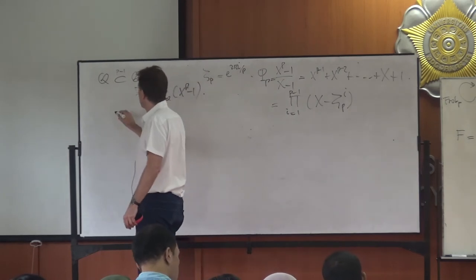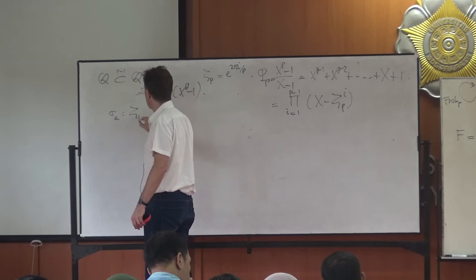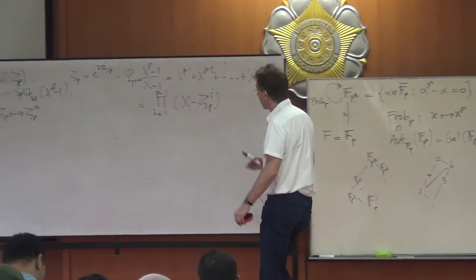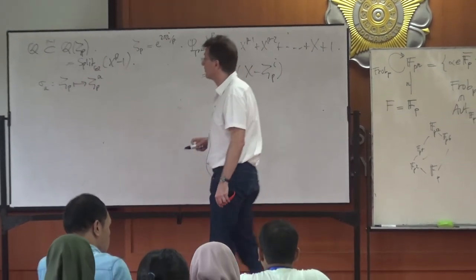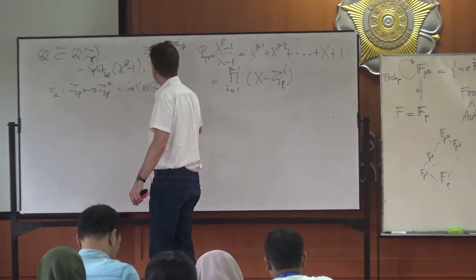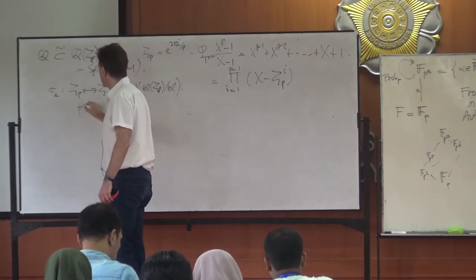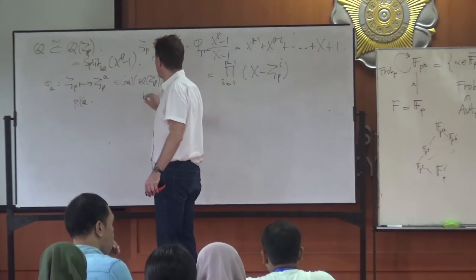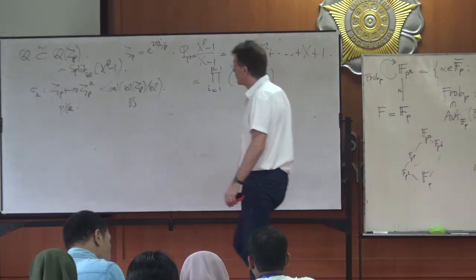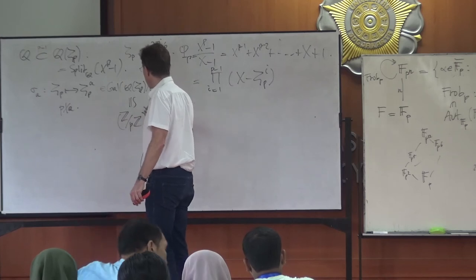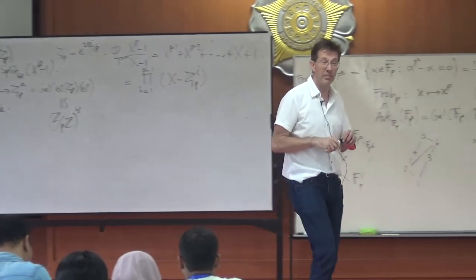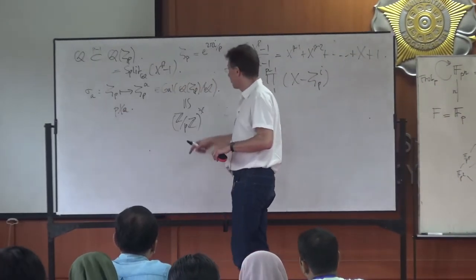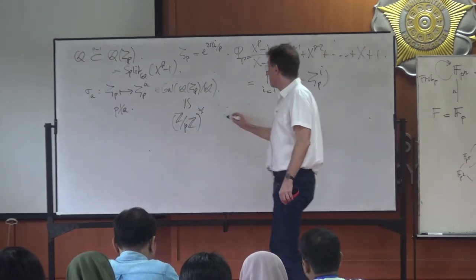For any integer a not divisible by p, the map σ_a: ζ_p ↦ ζ_p^a sends a primitive p-th root of unity to another primitive one, and extends to a field automorphism. The Galois group of Q(ζ_p) over ℚ is therefore isomorphic to (ℤ/pℤ)★, since σ_a ∘ σ_b = σ_{ab}: raising to the power a then b raises to the power ab.